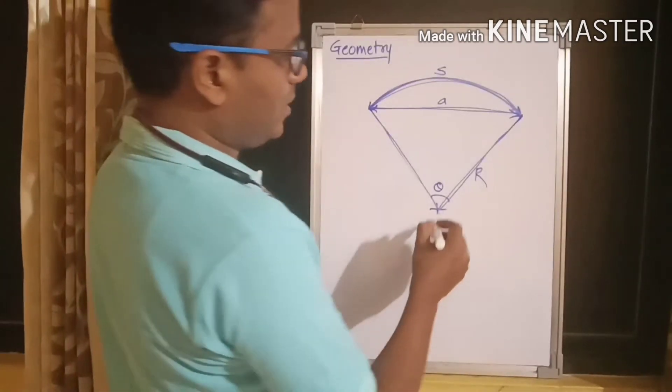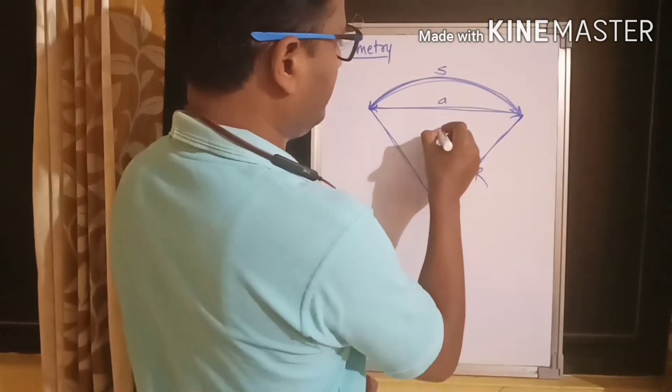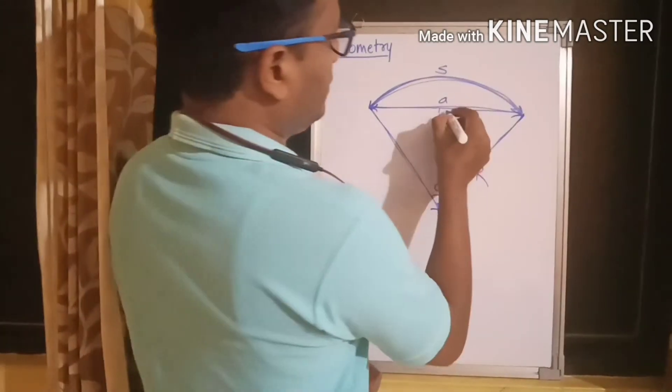And the included angle for this chord or this arc is say theta. Now, what I do? I draw a straight line from here, connecting the chord.